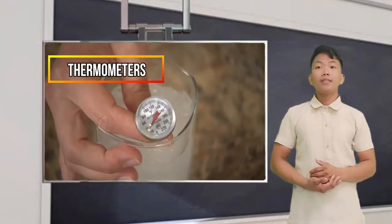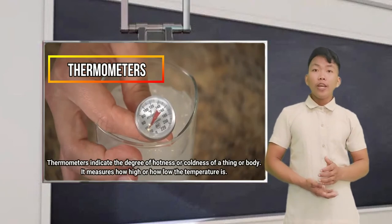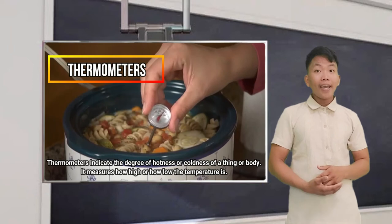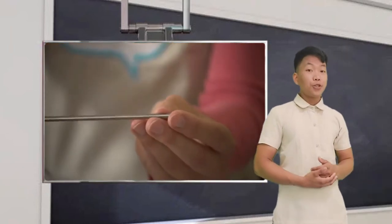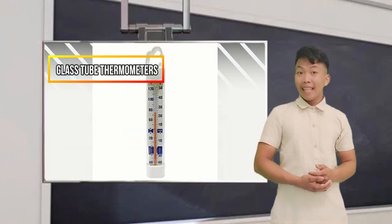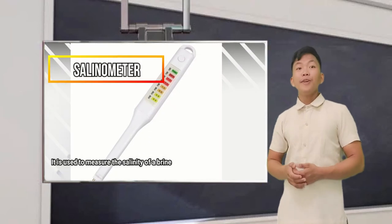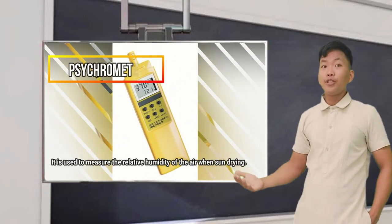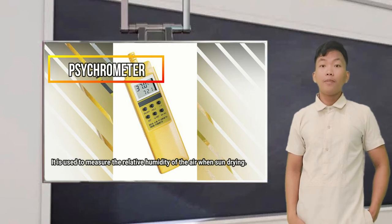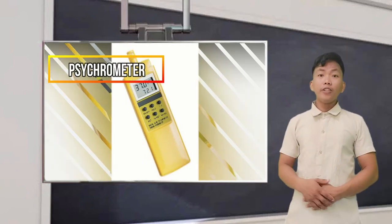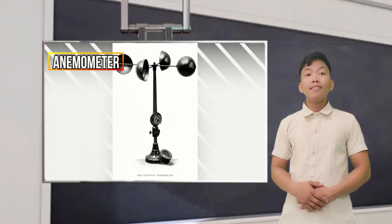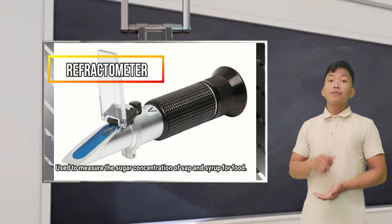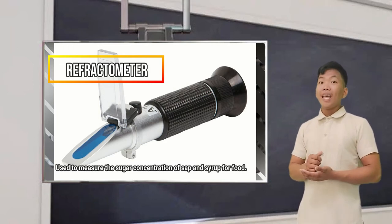Next, we have thermometers. Thermometers indicate the degree of hotness or coldness of a thing or body — they measure how high or low the temperature is. We have glass tube thermometers. Next, the salinometer, which is used to measure the salinity of a brine. The psychrometer is used to measure the relative humidity of the air during sun drying. The anemometer is used to determine the velocity of wind during sun drying. And the refractometer is used to measure the sugar concentration of salt and syrup for food.